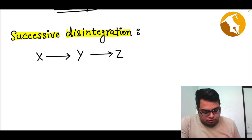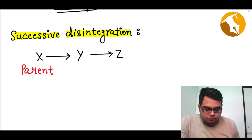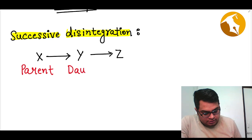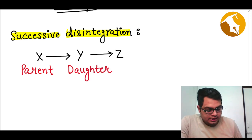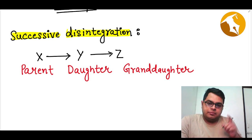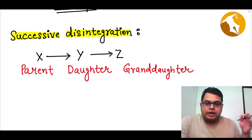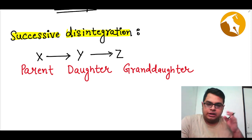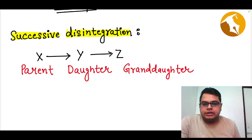X here is known as the parent nuclei. Y here is known as the daughter nuclei and Z here is known as the granddaughter nuclei. So we have three sorts of nuclei: X decays into Y, Y decays into Z. X is the parent, Y is the daughter, and Z is the granddaughter.